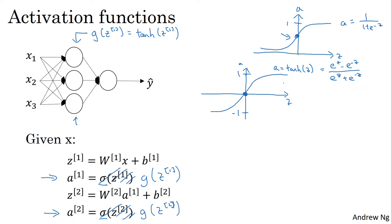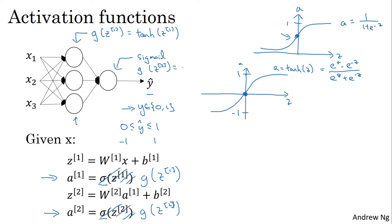One takeaway is that I pretty much never use the sigmoid activation function anymore. The tanh function is almost always strictly superior. The one exception is for the output layer, because if y is either 0 or 1, then it makes sense for y-hat to be a number between 0 and 1 rather than between minus 1 and 1. So the one exception where I would use the sigmoid activation function is when you're using binary classification, in which case you might use sigmoid for the output layer. So the activation functions can be different for different layers.